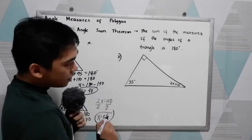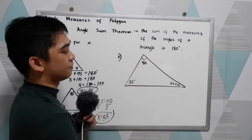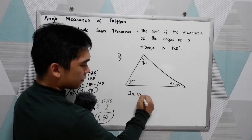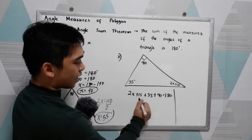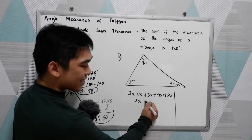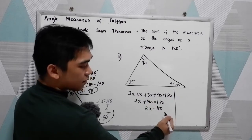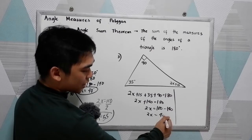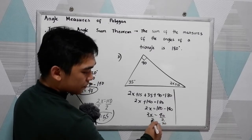Now number three, study our figure. We have a triangle with a perpendicular, so that angle is 90. Solve for x. We know that 2x plus 15 plus 35 plus 90 is equal to 180. Now 15 plus 35 is 50, plus 90 is 140. So 2x plus 140 equals 180. Move 140 to the right as negative 140, so 2x equals 40. Divide by 2: x is equal to 20.